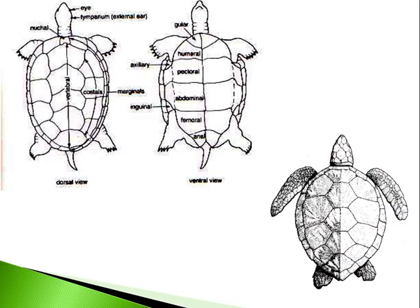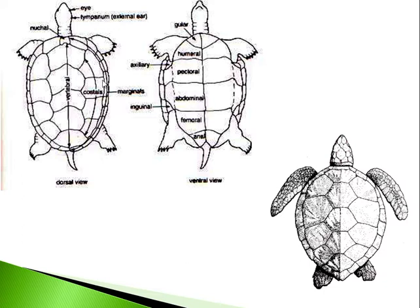The entire body is enclosed in a shell. The dorsal part of the shell is called the carapace and the ventral part is called the plastron. Both the carapace and plastron are made up of scales called scutes — large horny flat ectodermal scales overlaid by horn. The scutes compose both the plastron as well as the carapace.